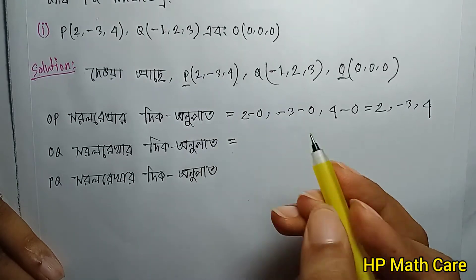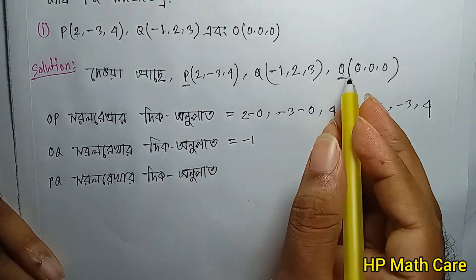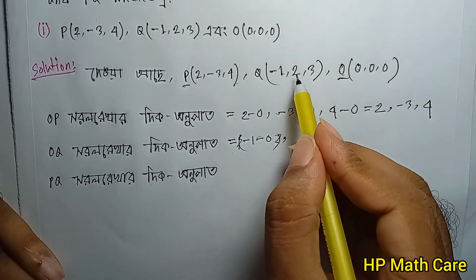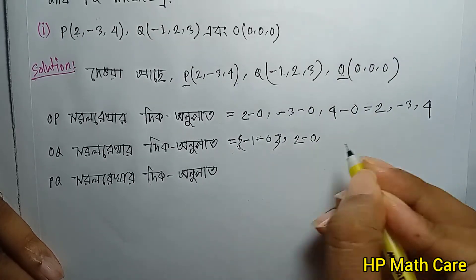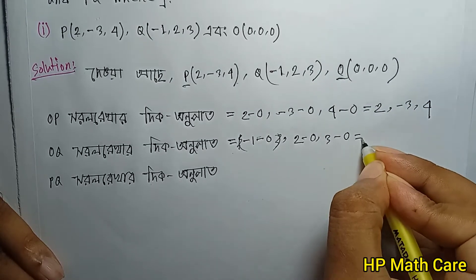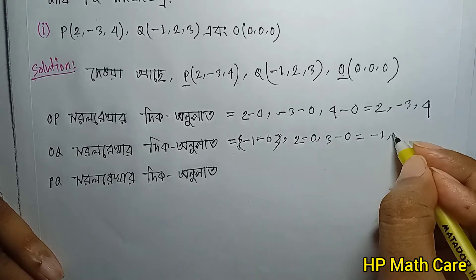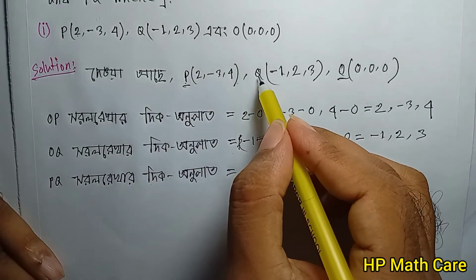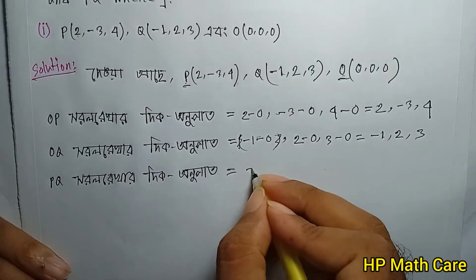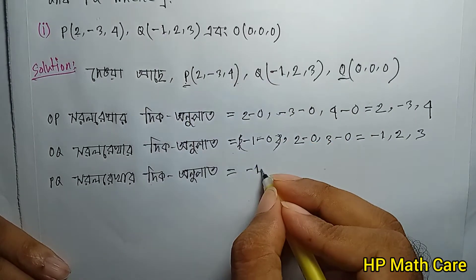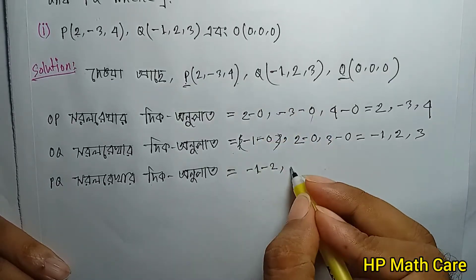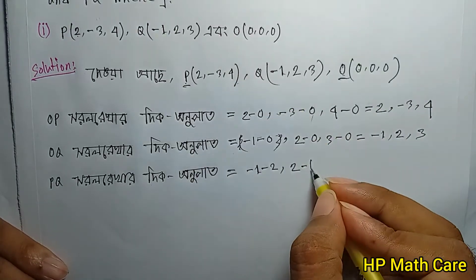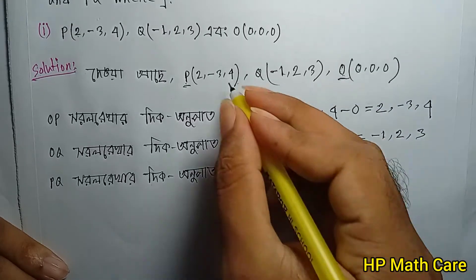Direction cosines for OQ: O is (0,0,0), Q is (-1,2,3). So OQ gives: minus 1 minus 0 equals minus 1, 2 minus 0 equals 2, 3 minus 0 equals 3. Back-end: minus 1, 2, 3. And for PQ: PQ can become (minus 1 minus 2), (2 minus negative 3), (3 minus 4) — that is minus 3, 5, minus 1, minus 2.